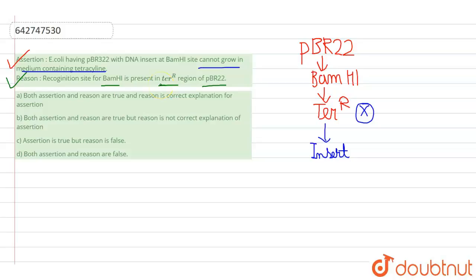Looking at the options: Option A says that both assertion and reason are true and reason is the correct explanation for assertion. This is the correct option, because the reason — that the recognition site for BamH1 is present in the tetracycline resistance region of pBR322 — correctly explains why E. coli having pBR322 with DNA insert at BamH1 site cannot grow in medium containing tetracycline.